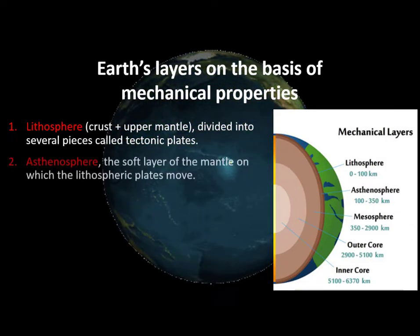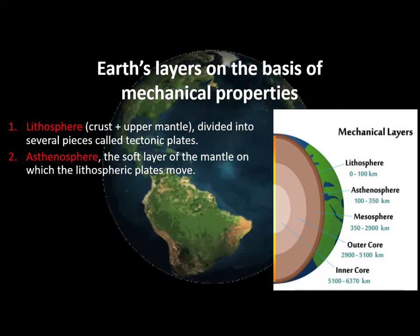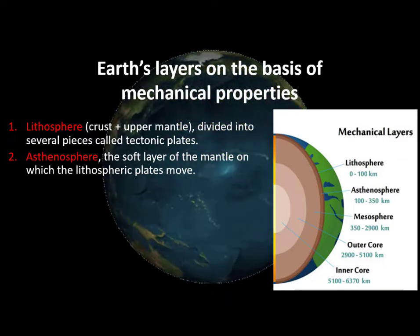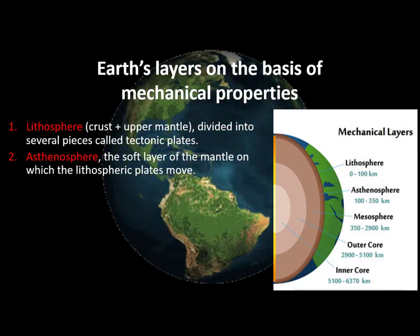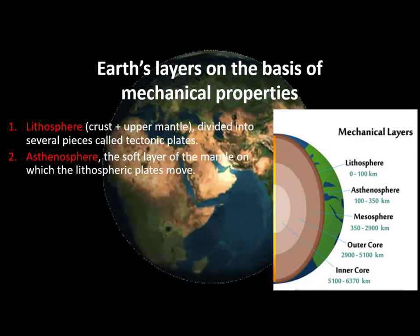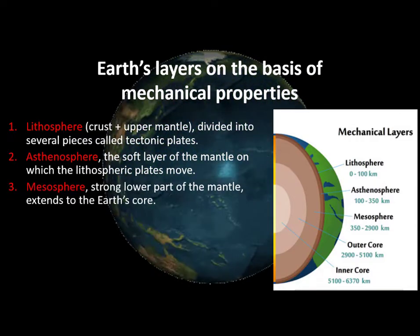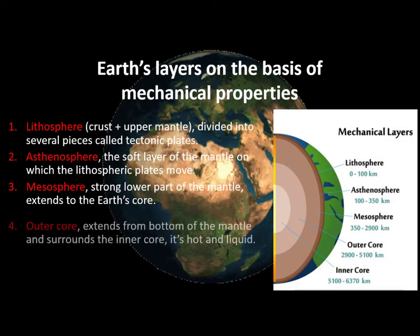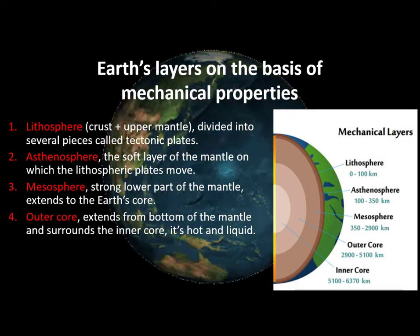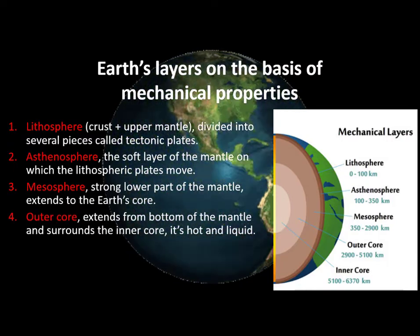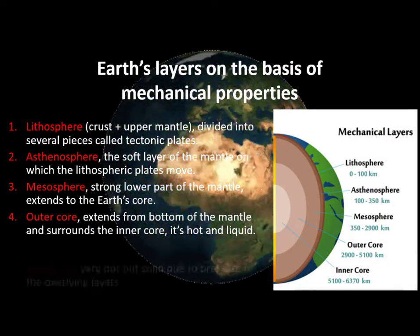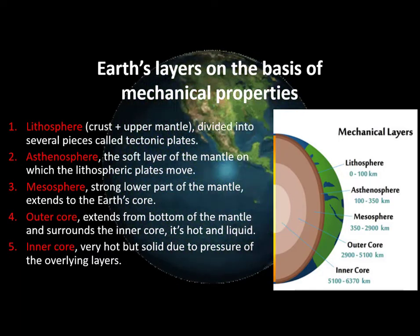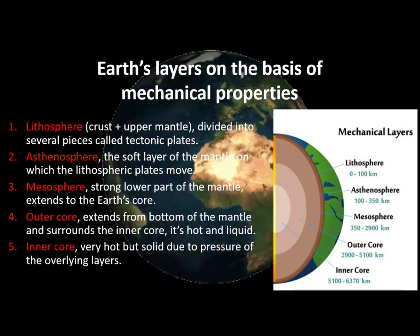The second layer is the asthenosphere, which is the soft layer of the mantle on which the lithospheric plates move. If you want to learn more about tectonic plates, you can watch my lecture on plate tectonics. Then comes the middle layer, the mesosphere — the strong lower part of the mantle which extends to the Earth's core. The fourth layer is the outer core, which extends from the bottom of the mantle and surrounds the inner core; it is hot and liquid. The innermost layer, the inner core, is very hot but solid due to the pressure of the overlying layers.